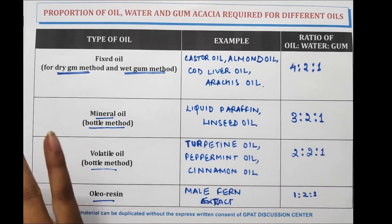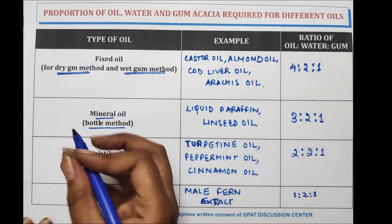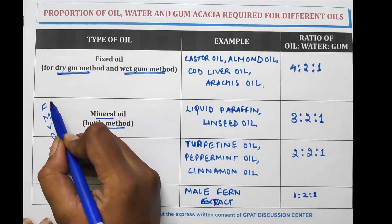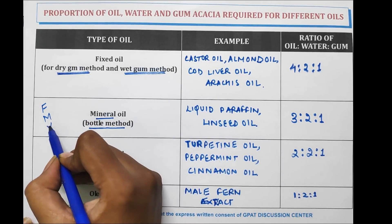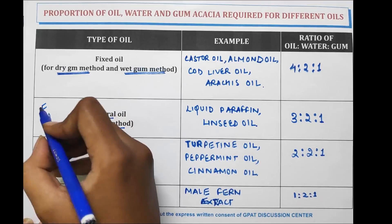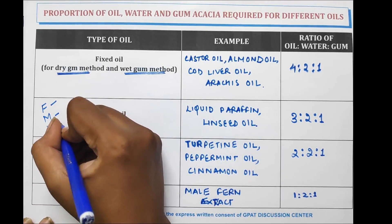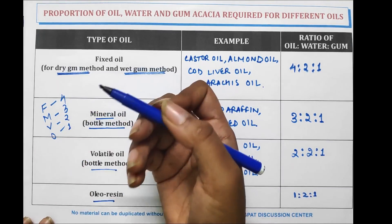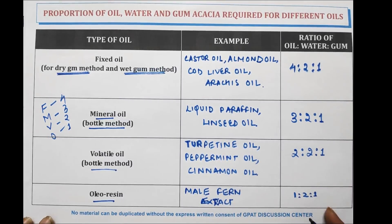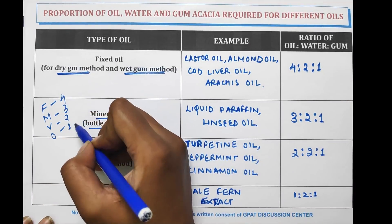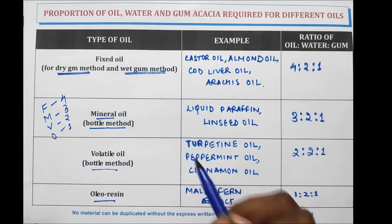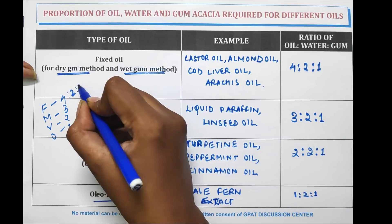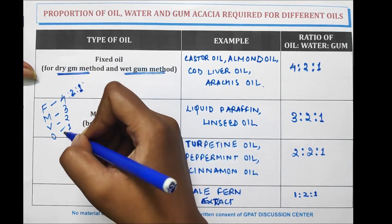The trick to remember all of these is F, M, V, O — where F stands for fixed, M for mineral, V for volatile, and O for oleurizing. F, M, V, O corresponds to 4, 3, 2, 1 — that is the ratio of oil. The water and gum ratio of 2:1 is similar for all types. Only the concentration of oil varies.